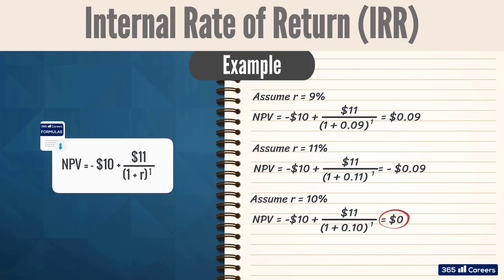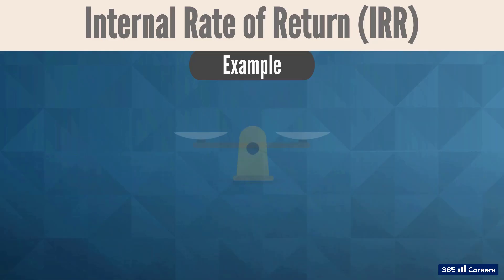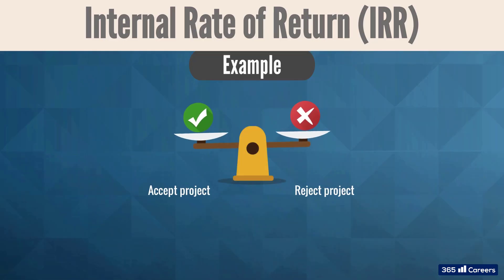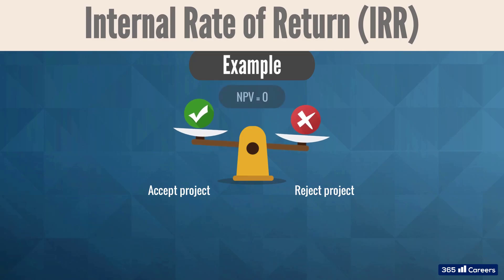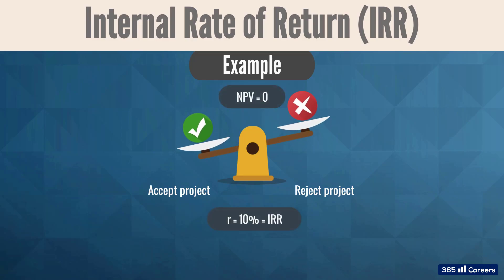This results in a net present value of $0. This trial-and-error procedure tells us that the NPV of the project is zero when the discount rate R equals 10%. In other words, if the actual discount rate is 10%, the investment is economically a break-even proposition because it doesn't create or destroy value. That's why we are indifferent between taking or abandoning this opportunity when its NPV is zero. We say that 10% is the project's internal rate of return.